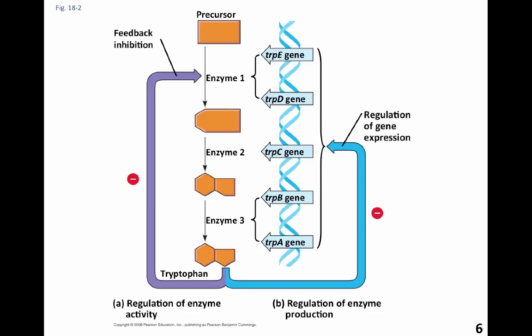Study this picture. On the left side we're looking at feedback for regulating enzyme activity, and on the right side we're looking at feedback that regulates not the activity of the enzyme, but in fact the enzyme production. Towards the top of the screen, we're starting with some kind of precursor, a chemical that's present in the cell. There's an enzyme that facilitates a reaction and we get a product, then a second enzyme, then a third — to get the final product, which is tryptophan, one of the amino acids.